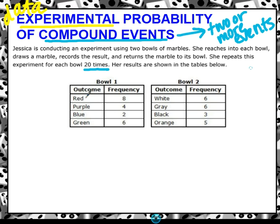Bowl one: a red was drawn eight times, a purple was drawn four times, a blue twice, a green six times. Remember, frequency just means the amount that something occurs or how many times something happens. So red happened eight times, purple four times. Bowl two: white frequency was six, gray was six, black three times, and orange five times.